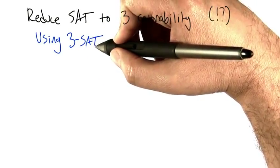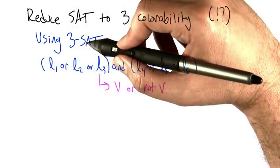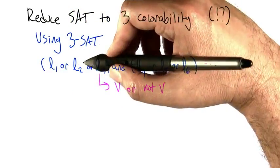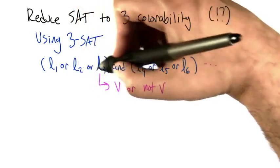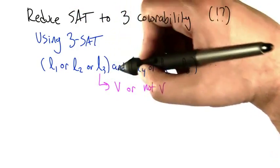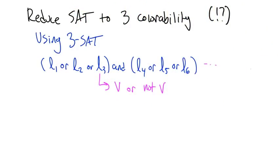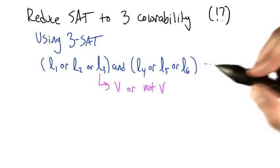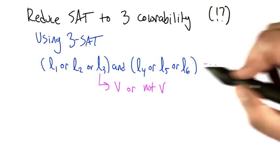3-SAT are just the satisfiability formulas. They have the form like so where the whole formula is a bunch of ANDs of clauses. So it's clause AND, clause AND, clause AND, and so on until all the clauses have been expressed.